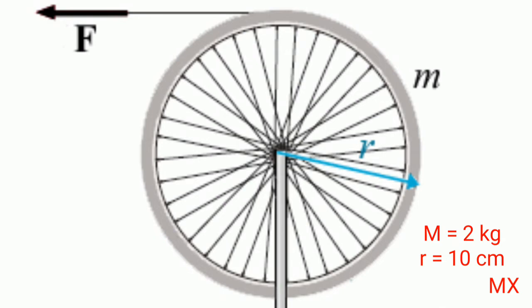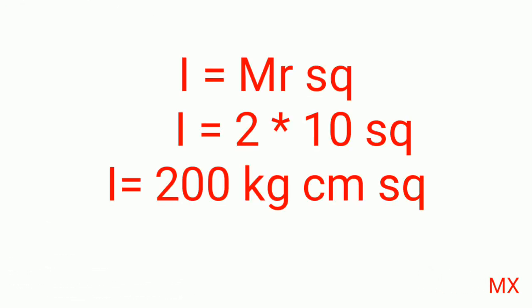Then the moment of inertia of this bicycle wheel is I equals mR square where m is a mass of 2 kg and r is a radius of 10 cm. Therefore, the product of 2 times 10 square comes to 200 kg cm square. The unit of inertia is taken as kg cm square.